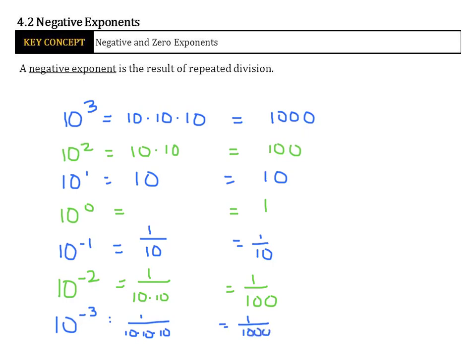One common misconception with negative exponents is that it turns our numbers negative. No — in fact, it just puts it over the number 1. Our general rule: anytime you have a negative exponent, if you have a to the negative n, we can write that as a positive exponent by going 1 over a to the positive n.